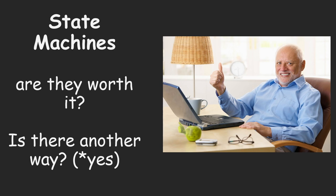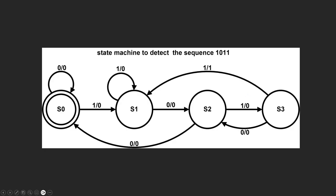A lot of people can relate to that feeling when they first hear about state machines and learn about them. If you look up a state machine you might see something that looks like a formal diagram that doesn't make a lot of sense — what are the ones and zeros? I learned about this in my electrical engineering undergrad. Basically it's saying we have four states: S0, S1, S2, S3, and you can move between them by different transition conditions.